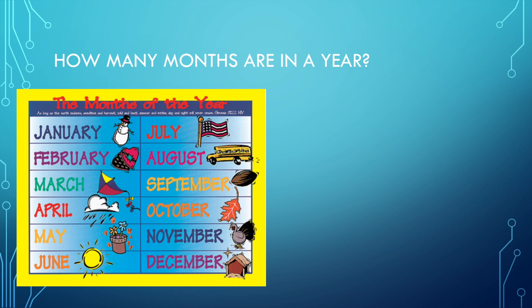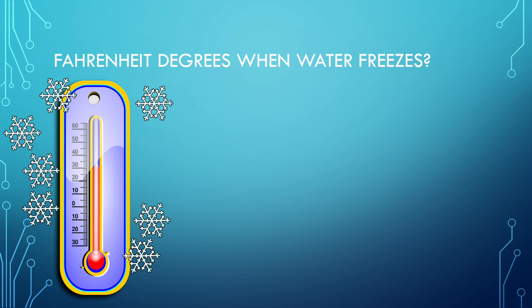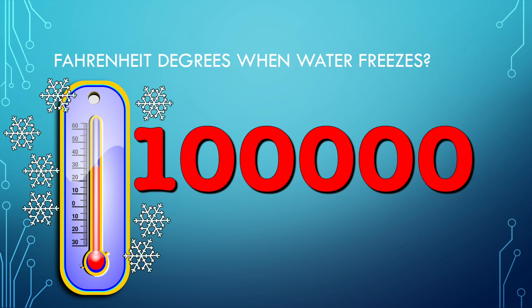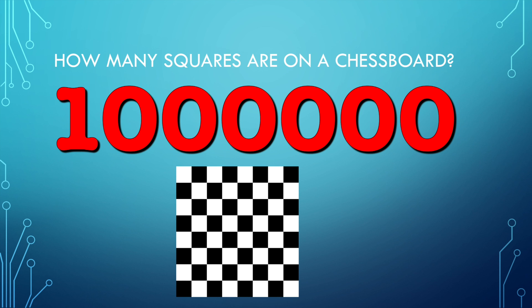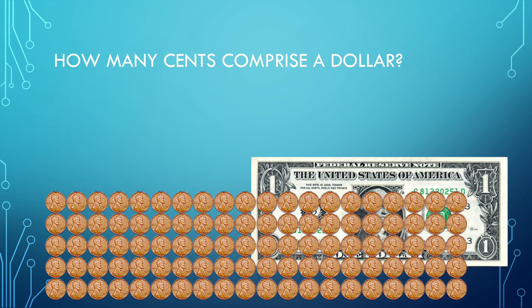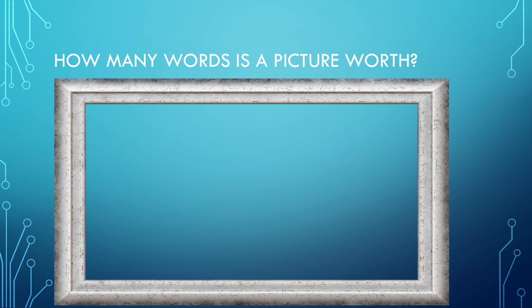How many months are in a year? One one zero zero. Fahrenheit degrees when water freezes? One zero zero zero zero zero. How many squares are on a chessboard? One zero zero zero zero zero zero. How many cents comprise a dollar? One one zero zero one zero zero.